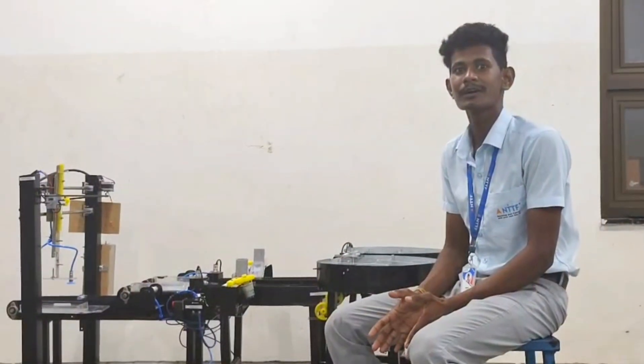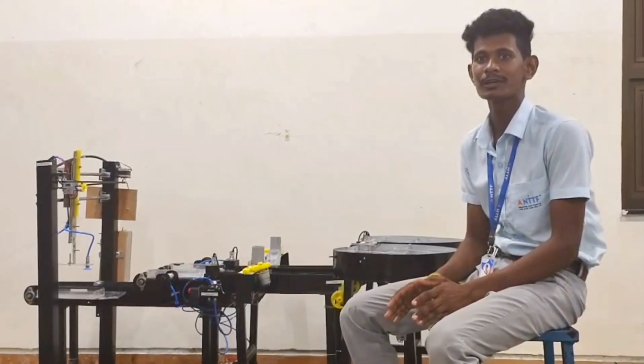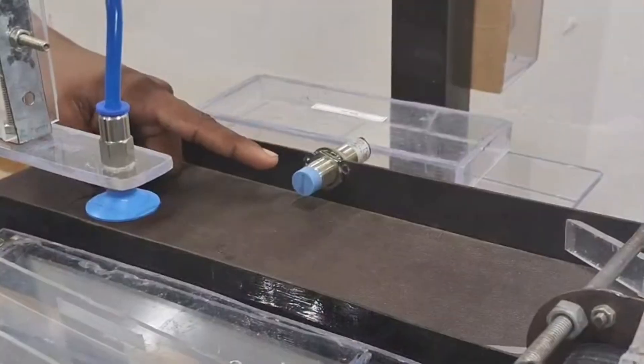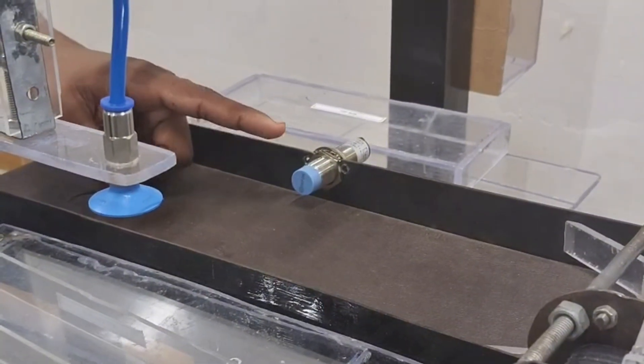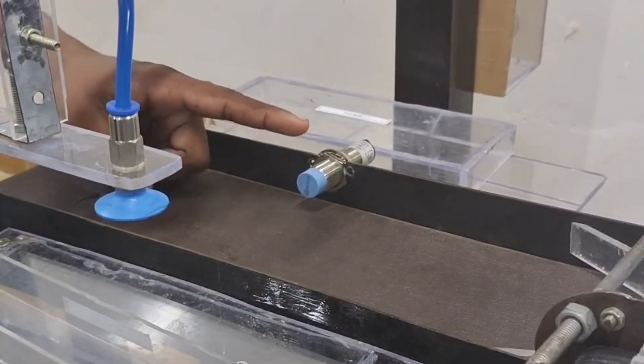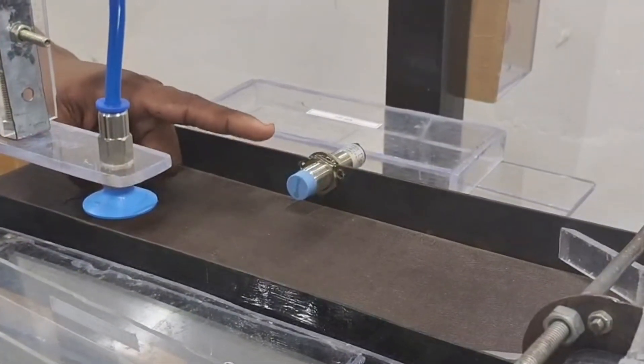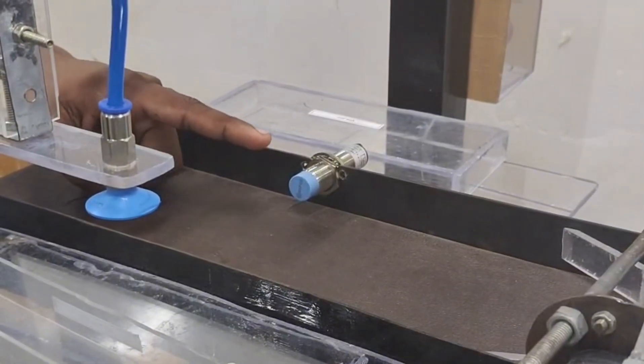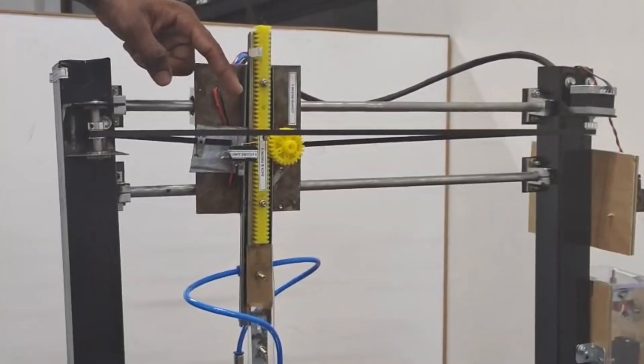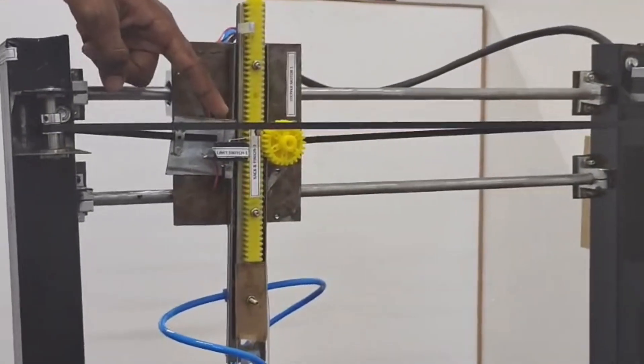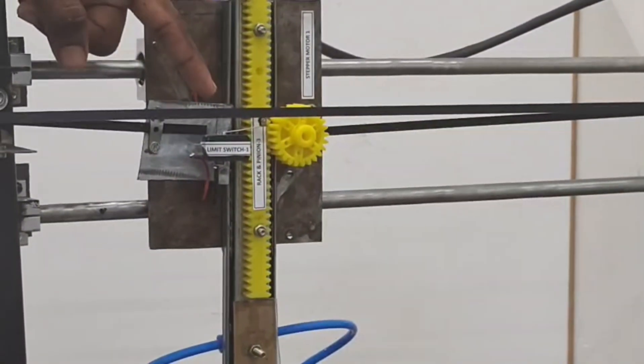I am Kuswath Amman, member of the Automatic Carom Coin Packing Machine. I am going to explain about mechanical components. This is a capacitive proximity sensor. This is used for sensing the box and counting the coins. The operating voltage is 24V DC and 200mA. This is a limit switch. It is used to control the position of set-action movement. The operating voltage is 24V DC and 500mA.